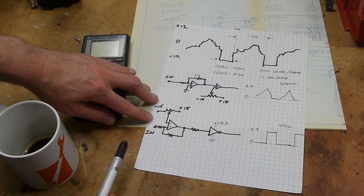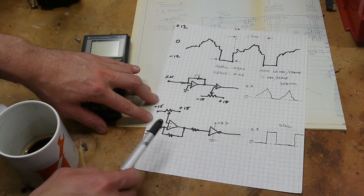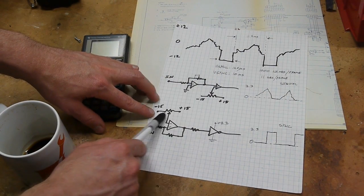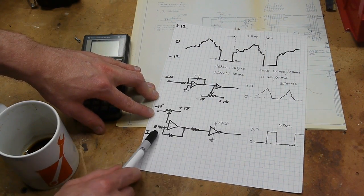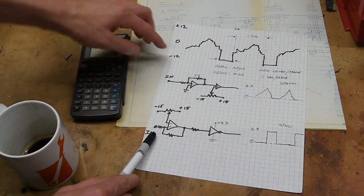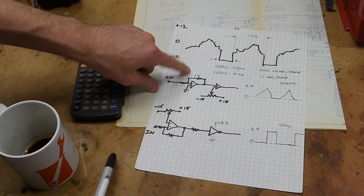Then to recover the sync pulse, I have another op amp set up as a comparator. Its negative input is a fixed voltage between negative 15 and 15, and there's a little bit of positive feedback so that when the signal goes below the threshold—I set it to something like negative 11—as soon as this gets down to its most negative voltage, we know we have a sync pulse.